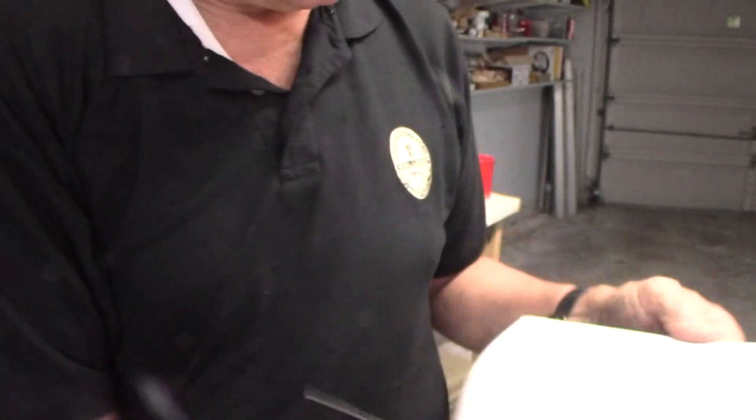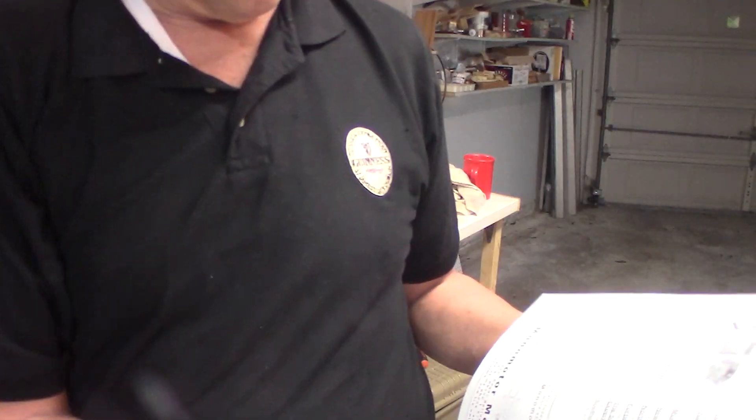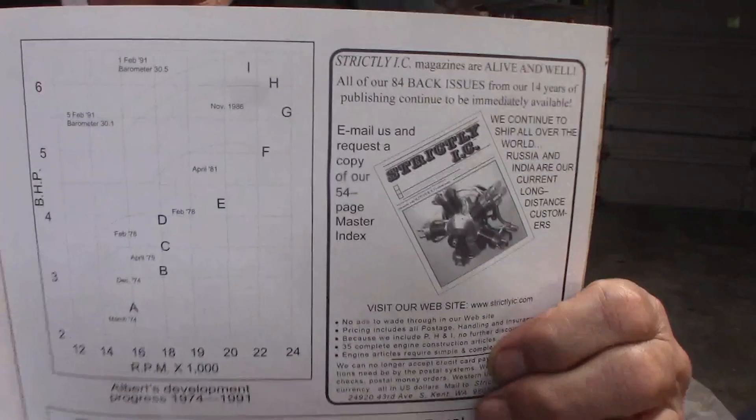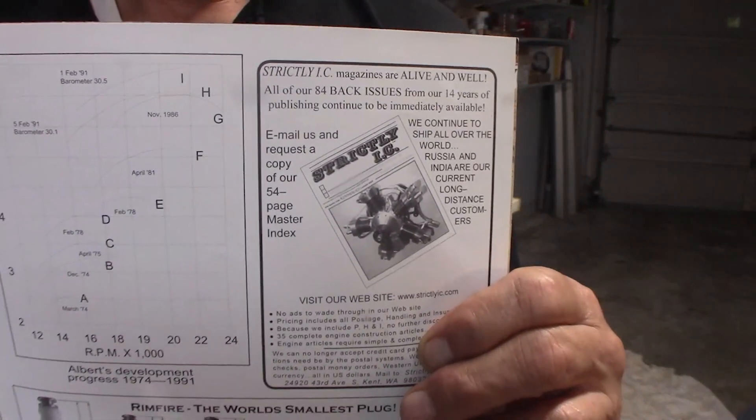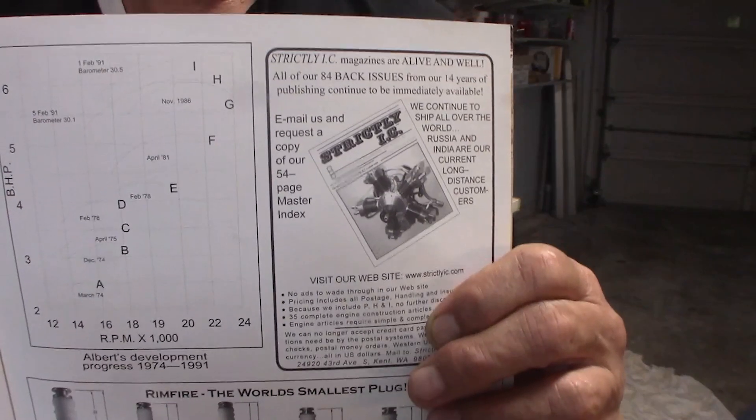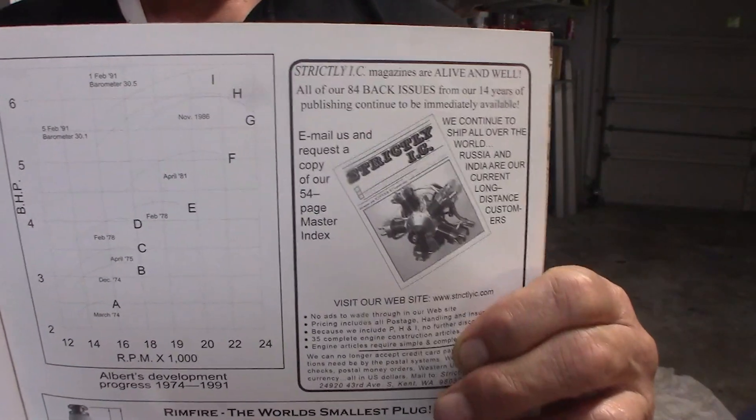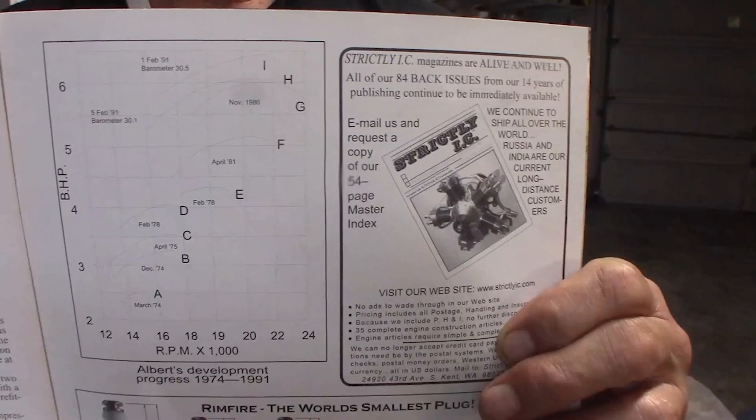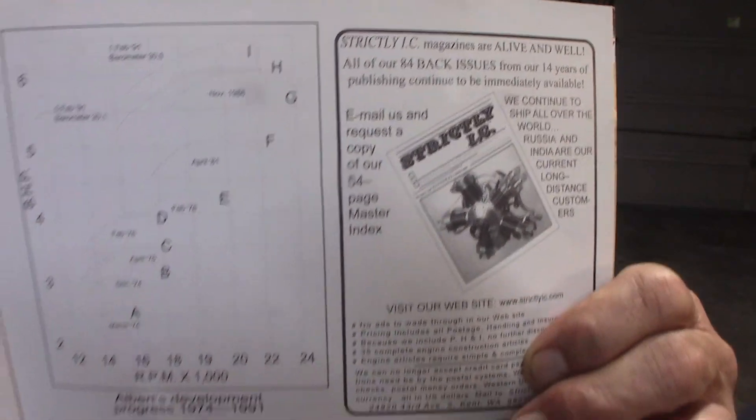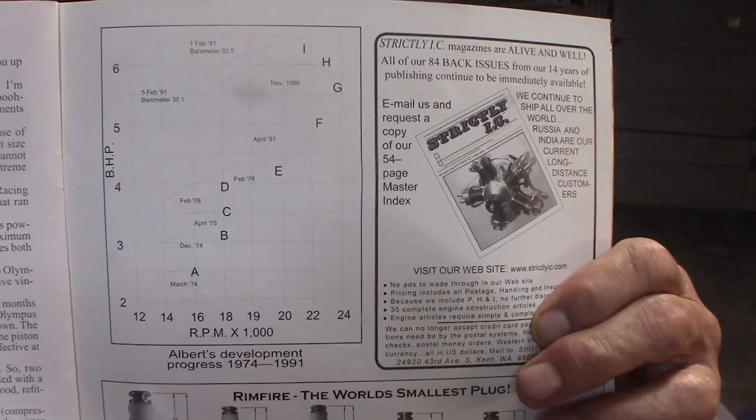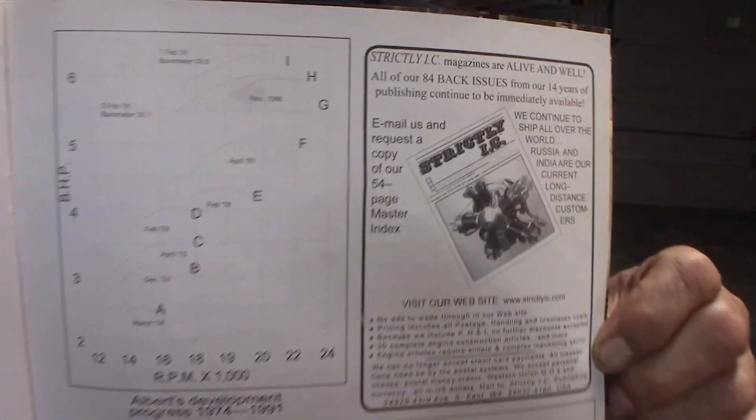But this is a great source of information. In this magazine there's an ad for the back issues of Strictly IC magazine. Strictly IC is strictly internal combustion. And this particular issue of Model Builder was August 2007.